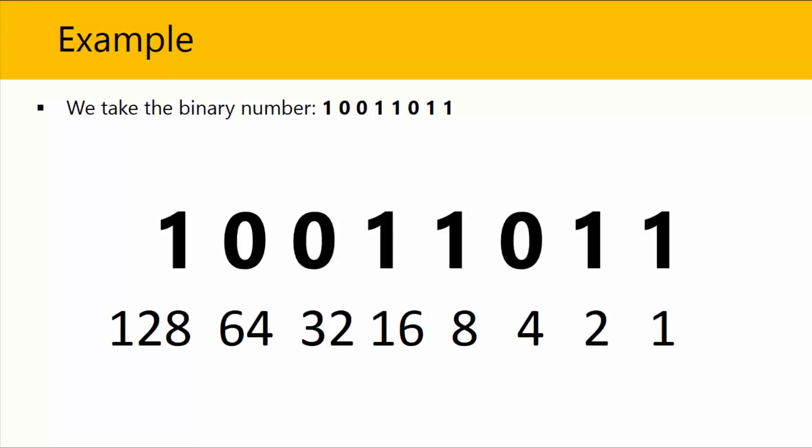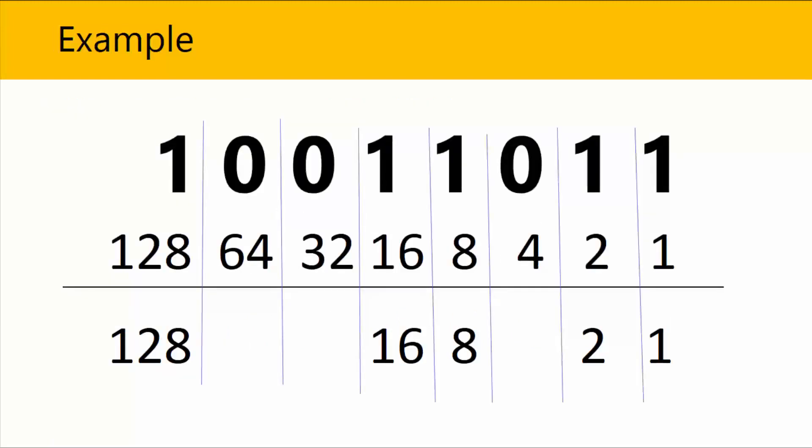So the second step is that you put a line below the number row values and only put the number row values under the binary number which has 1. So wherever there is 1, you will only write it again at the bottom.